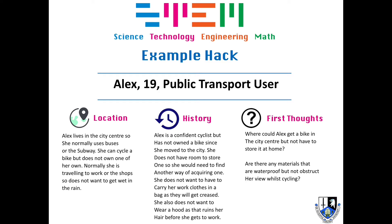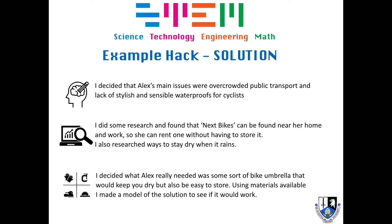She also does not want to wear a hood as that ruins her hair before she gets to work. Where could Alex get a bike in the city center but not have to store it at home? Are there any materials that are waterproof but will not obstruct her view while she's cycling? There are lots of other questions you can be thinking about at this stage, so start making notes. I've decided that Alex's main issues were overcrowded public transport and a lack of stylish and sensible waterproofs for cyclists.